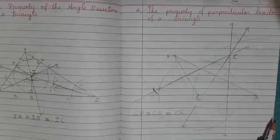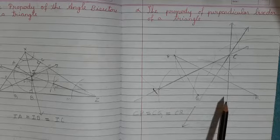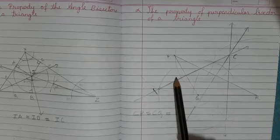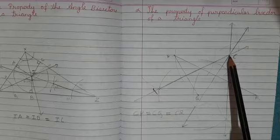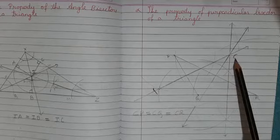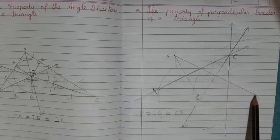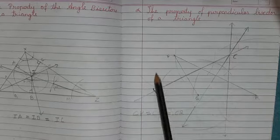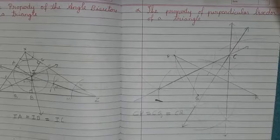This was the property of perpendicular bisectors of a triangle. What we have done: first we drew a triangle, then we drew perpendicular bisectors of these three sides. And the three perpendicular bisectors bisected or intersected each other at a point C, which was outside the triangle. And the distances CP, CQ, and CR are equal, so we are able to draw a circle at the outer side of the triangle.